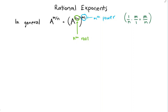Hey everyone, so in this video I'd like to continue talking about rational exponents. In the last video we ended on this idea that taking some number to an exponent that's a fraction meant applying the denominator as some nth root and the numerator as some nth power afterwards. Maybe before we tackle some problems, let's remind ourselves of this nth root idea.